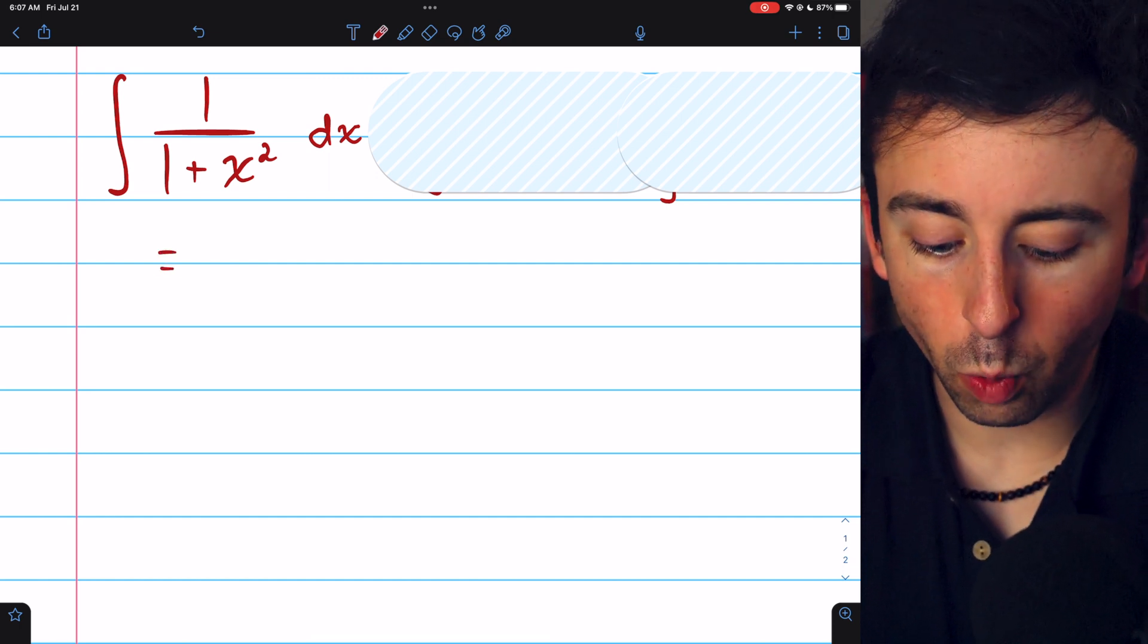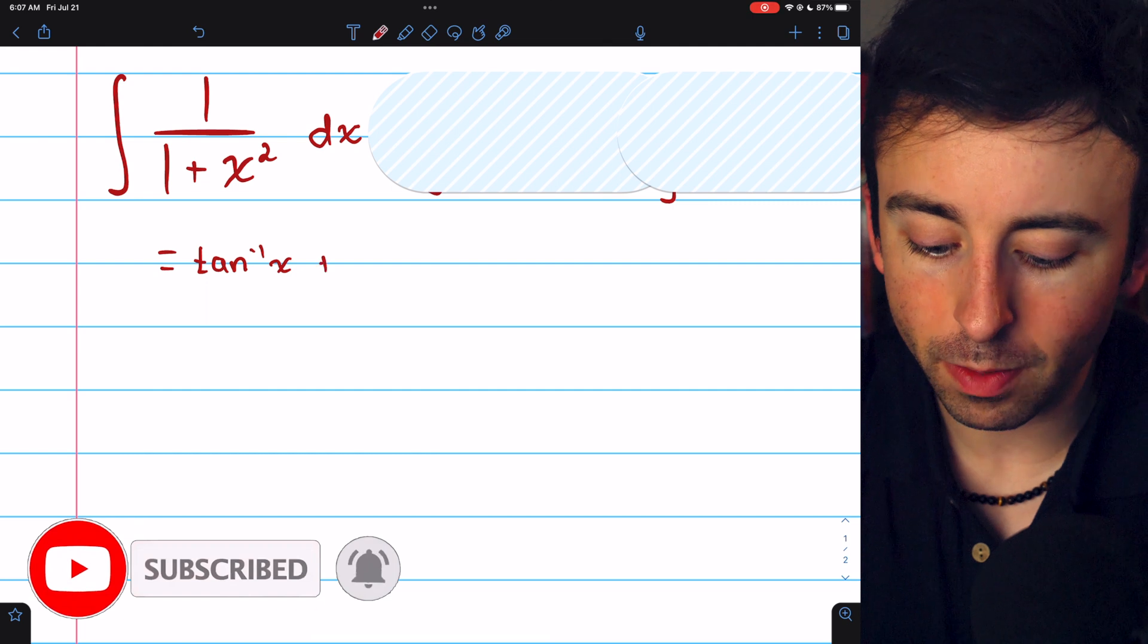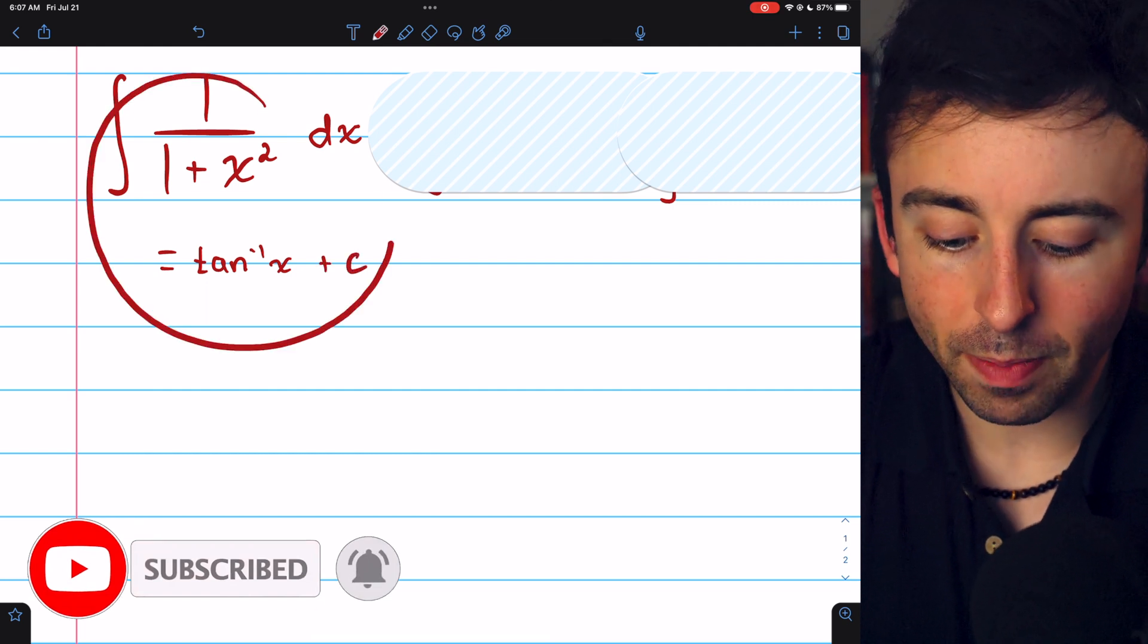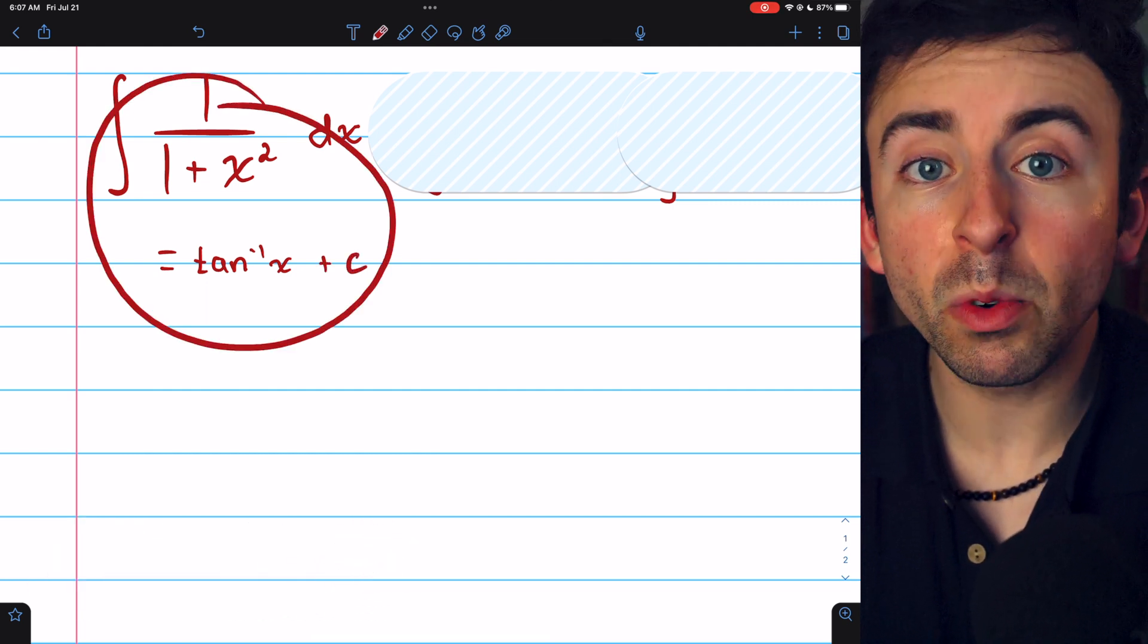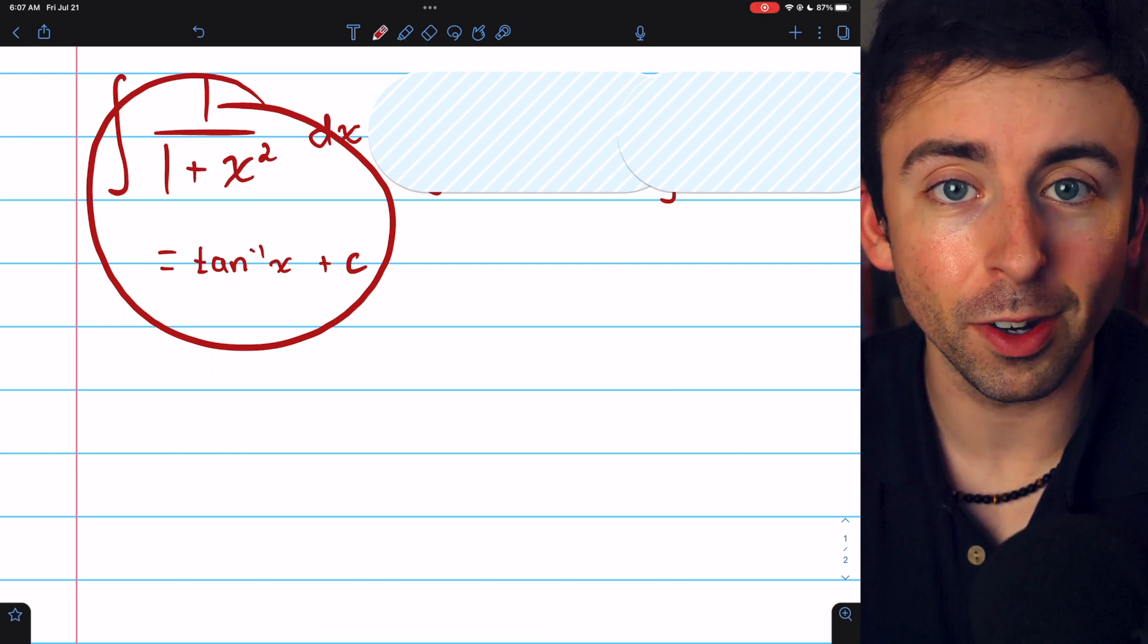The integral of 1 over 1 plus x squared is the inverse tangent function, plus c. This is something you should probably remember. However, you can also evaluate this integral with a clever trig substitution.